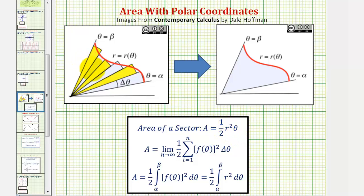Remember the formula for the area of a circular sector is area equals one-half r squared theta. And as the number of circular sectors increases, the area of the circular sectors approach the area bounded by the polar curve as we see here on the right.